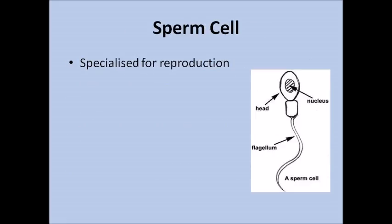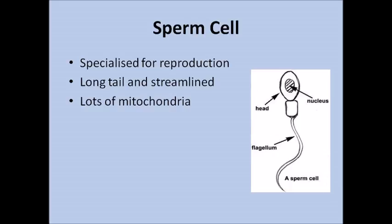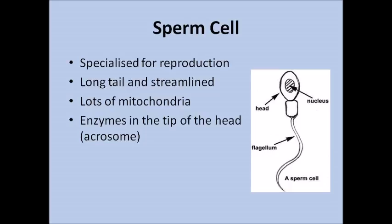The first type of cell I'd like to talk about are sperm cells. These are specialised for reproduction as they contain half the amount of DNA needed to make a living thing — the other half comes from the egg. Sperm cells have a long tail and are streamlined so they can reach the egg as quickly as possible. They also have lots of mitochondria, because mitochondria is where respiration happens, giving the sperm lots of energy. Sperm cells also have enzymes in the tip of the head, called the acrosome, which allow the sperm to break through the jelly coating of the egg.